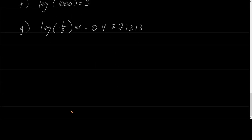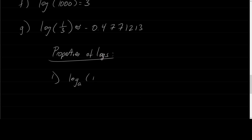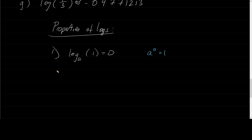Now let's get some properties of logs — these apply to any base. The first property is that log base a of 1 is equal to 0, regardless of what the base is. The reason is that a to the 0 is equal to 1 for any finite value of a. The next property: log base a of a is equal to 1. Why? Because in exponential form it's saying a to the 1 is equal to a — a to the 0 equals 1, a to the 1 equals a.